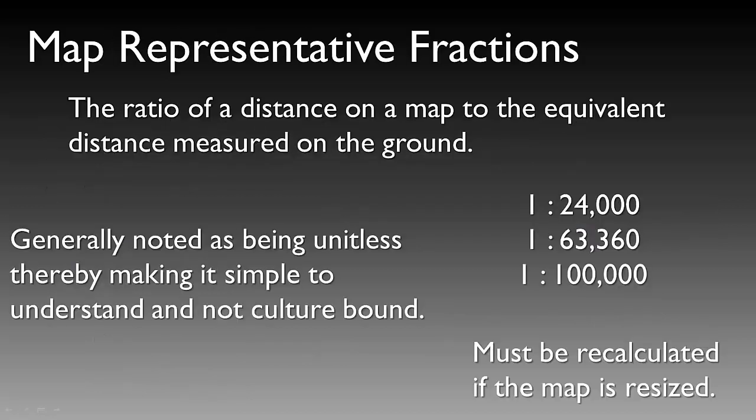Representative fractions are the ratio of a distance on the map to the equivalent distance measured on the ground. Examples include 1 to 24,000 such as the common USGS topographic map, 1 to 63,360, or 1 to 100,000. The representative fraction is generally considered unitless, making it simple to understand and not culture-bound.